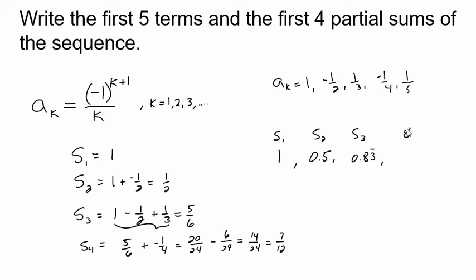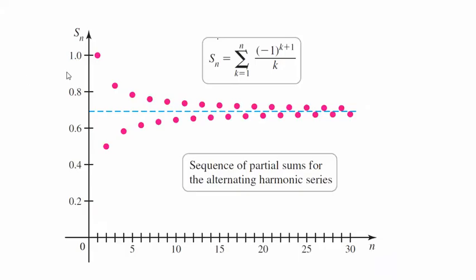And my next partial sum, S sub 4, is 7 twelfths, which is 0.583 bar. The reason I just want to look at these decimals, even though these aren't very nice, is because we're going to look at a graph. So maybe jot these down. We got 1, 0.5, about 0.8, and 0.6. So let's go look at this graph here.